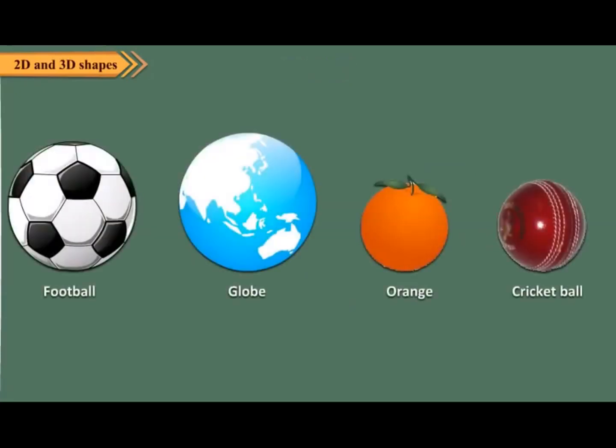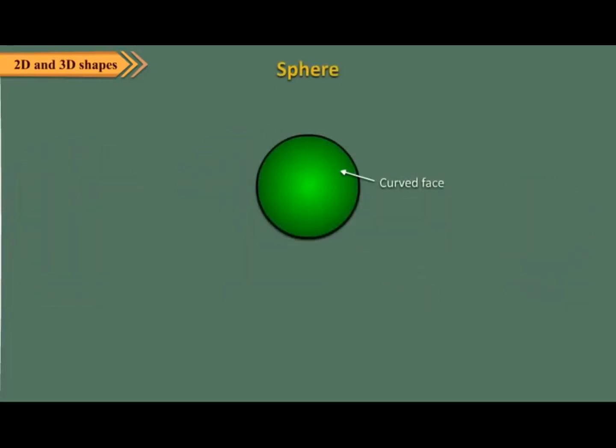Students, now take a look at the shape of objects shown here. Each one of these objects has the shape of sphere. A sphere has one curved face. It has no vertex and no edge.